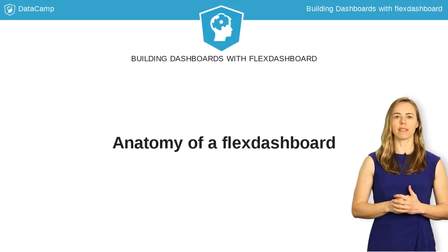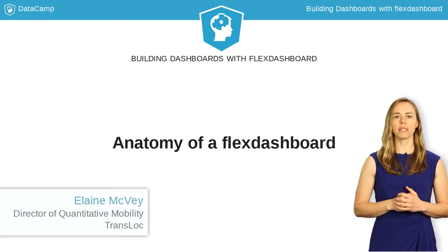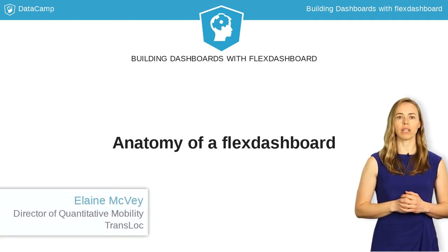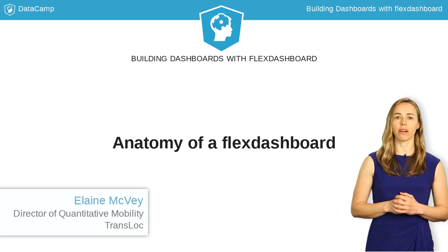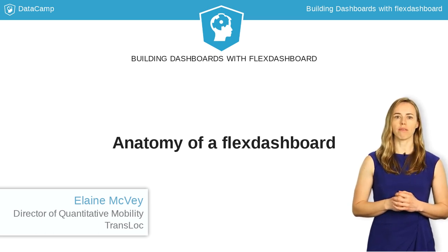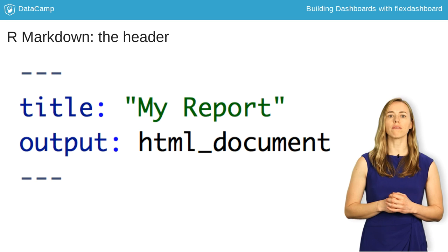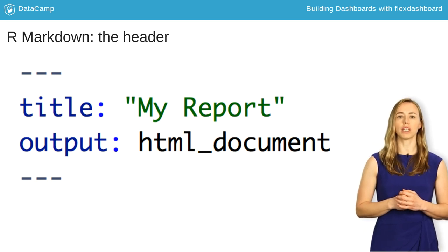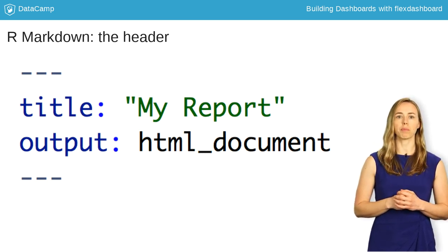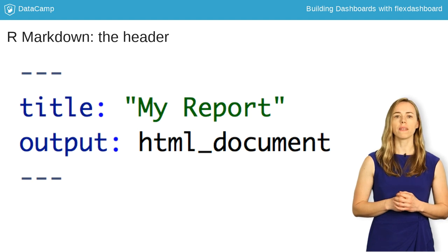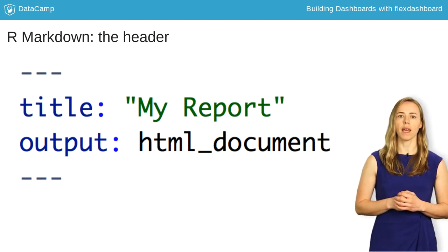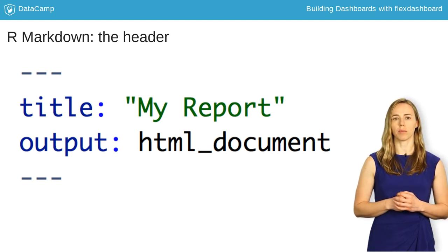We're going to talk about the basics of how a Flex Dashboard is put together. The little piece of magic that turns R Markdown into a Flex Dashboard is in the header. Every R Markdown file starts with a header, and the key part for us is the output line. If you've used R Markdown before, you may have noticed that the output was set to HTML document, or perhaps PDF document. This option determines how everything in your R Markdown file is interpreted and what type of output is produced when you knit the document.